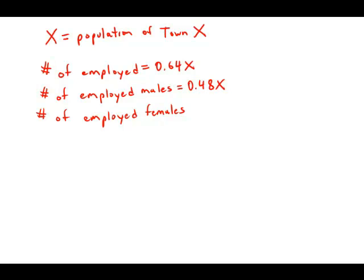The total number of employed people equals the number of males plus the number of females. So we subtract these two to get the number of females: 0.64X minus 0.48X equals 0.16X.